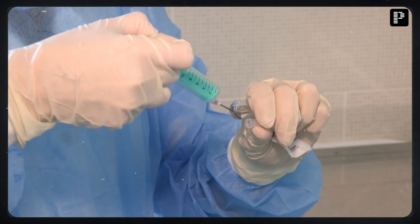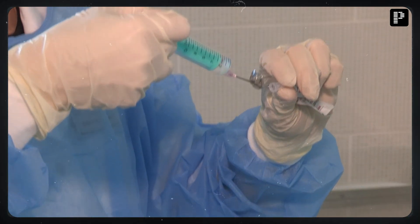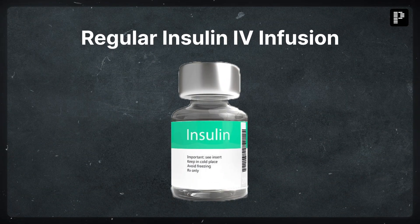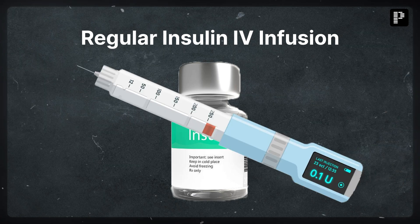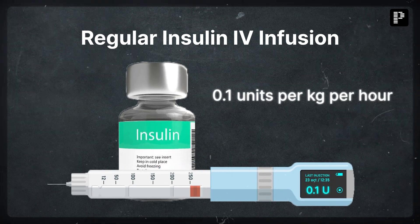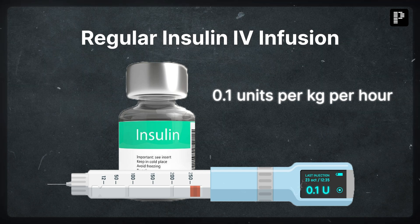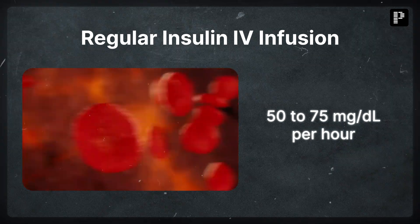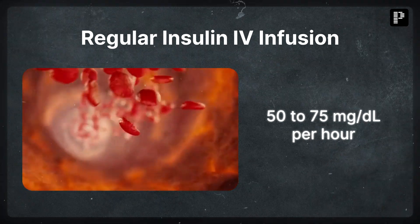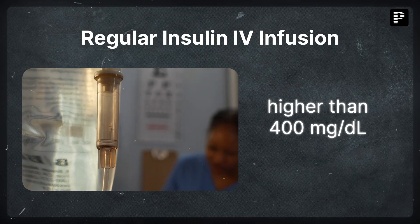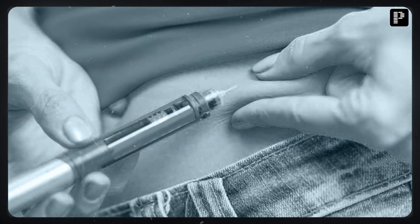To initiate insulin therapy, use regular insulin IV infusion with an initial dose of 0.1 units per kilogram per hour. The aim is to reduce blood glucose by 50 to 75 milligrams per deciliter per hour. If glucose levels are higher than 400 milligrams per deciliter, consider giving an additional insulin bolus.